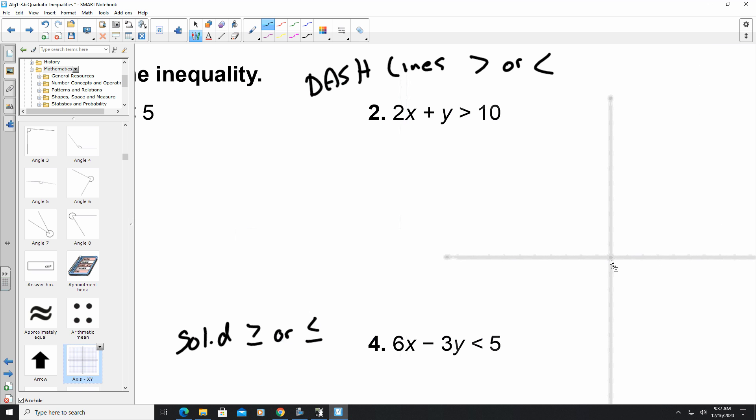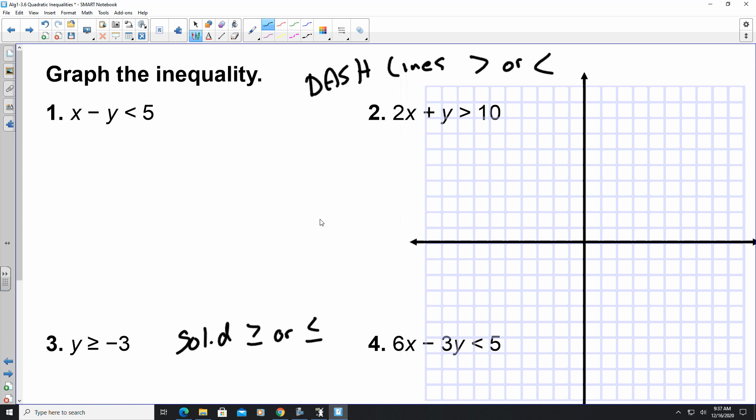Let's say we look at number 1 for instance. This is going to be negative y is less than negative x plus 5. I divide this by negative 1, so now this is going to be y greater than positive x minus 5. So my y-intercept is negative 5, so it's right there. My slope is 1, so it goes here.